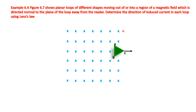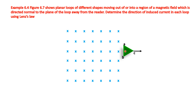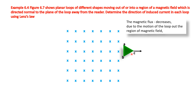Next, we consider the triangular plane. Its arrow direction shows it is moving out of the region of the magnetic field. Due to this motion, the magnetic field through the loop is decreasing, so the magnetic flux is decreased. To oppose this decrease of magnetic flux, according to Lenz's law, the induced magnetic field should be in the same direction as the given magnetic field — that is, away from the reader.